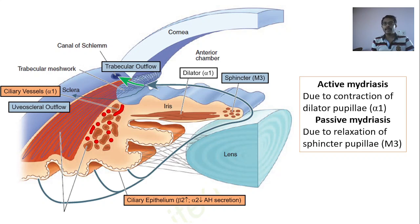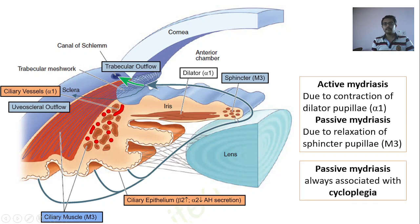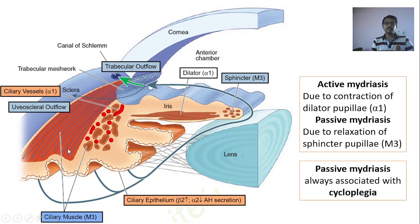The important difference lies in the M3 receptors, which are not only present on the sphincter pupillae but also on the ciliary muscles. So if you use a drug to inhibit M3 receptors, the same drug also inhibits M3 receptors on the ciliary muscles. While there is relaxation of the sphincter pupillae, there is also relaxation of the ciliary muscle, leading to a condition called cycloplegia. Whenever there is passive mydriasis, there is always associated cycloplegia. This is not seen with active mydriasis. Mydriasis causes photophobia because more light enters the eyes. Cycloplegia, due to loss of accommodation, causes blurred vision.